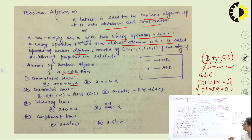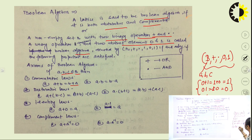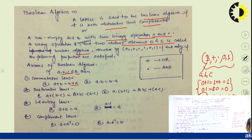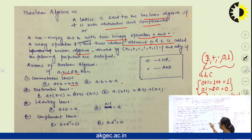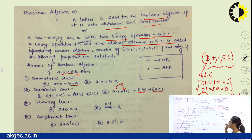The second axiom is the distributive law. The distributive law says that with either operator — addition or multiplication — a dot (b plus c) is equal to a dot b plus a dot c, and a plus (b dot c) is equal to (a plus b) dot (a plus c). Here addition is distributed over multiplication, and multiplication is distributed over addition.